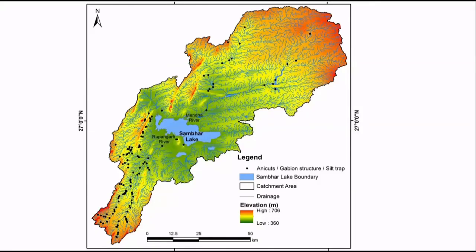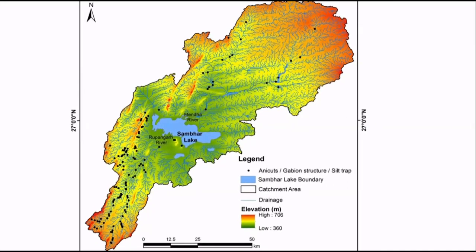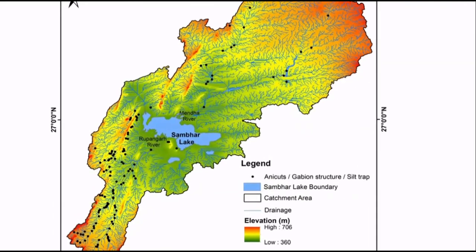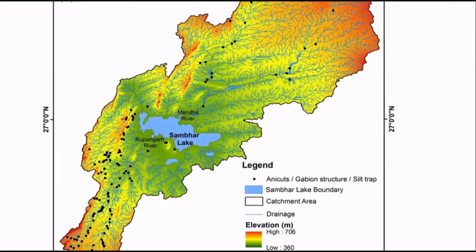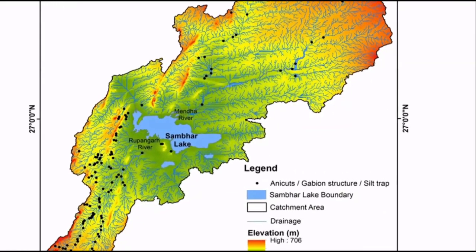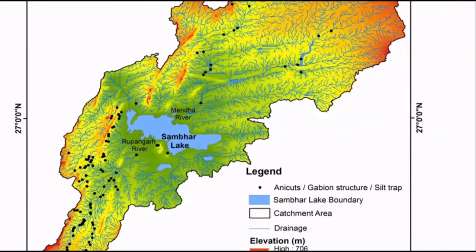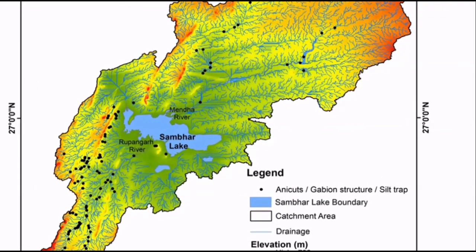This may be due to surrounding anthropogenic activities and construction of check dams and anicuts in the lake catchment, which curtail the runoff into the lake and provide favorable conditions for growth of algae. These structures have increased over the years, thus reducing the surface and subsurface runoff into the lake.